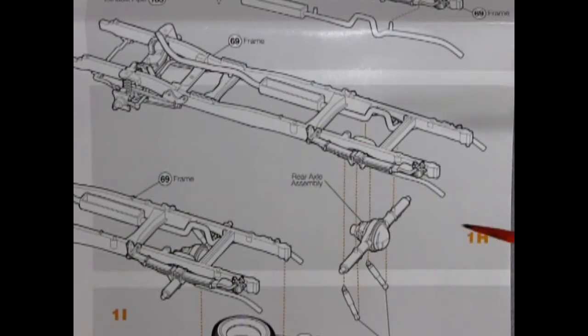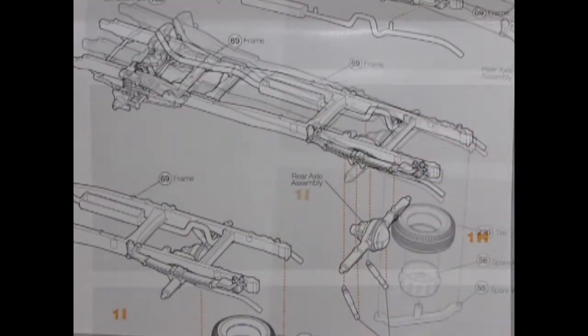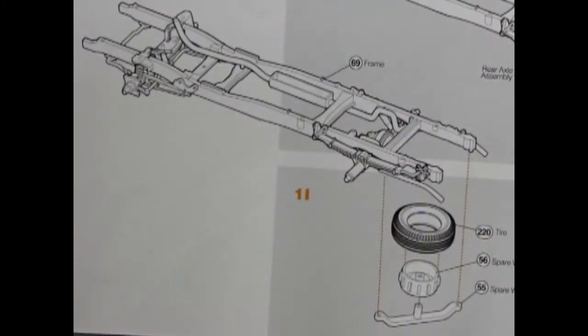Panel 1H shows our rear axle assembly gluing up onto our springs and the rear shock absorbers. And panel 1I is really reminiscent of the 53 Ford pickup truck from AMT because you have the tire, the spare wheel, and the spare wheel carrier gluing up underneath on our frame.